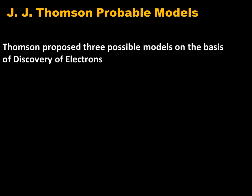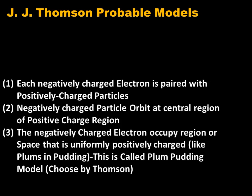Based on his discovery of electrons, J.J. Thomson proposed three possible models. He already knew that the atom is electrically neutral, and keeping this neutrality in mind, he proposed three models. The first possible model stated that each negatively charged electron is paired with a positively charged particle.